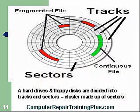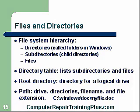Files and directories — the file system hierarchy. First we have directories. Inside the directories we can have child directories or subdirectories, and inside those is where we have our files. We have a directory table that lists the subdirectories and files. Root directory is the directory for our logical drives. A path gives you information such as the drive, the directory, a subdirectory, a file name, and also the extension.